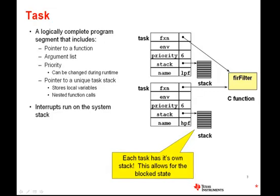One essential concept to understand about tasks is that each task instance has its own stack. This is what allows tasks to block and differentiates them from software interrupt threads, which by definition must always run to completion. The fact that each task must allocate its own stack makes them more functional and easier to use, but also makes them, in terms of memory usage, a little bit more expensive, so they may be inappropriate for use in systems with highly constrained memory.